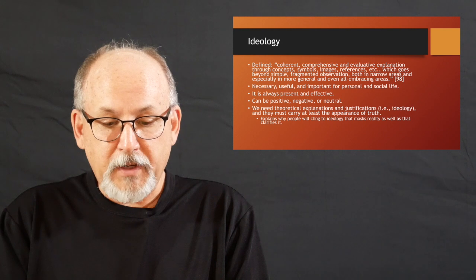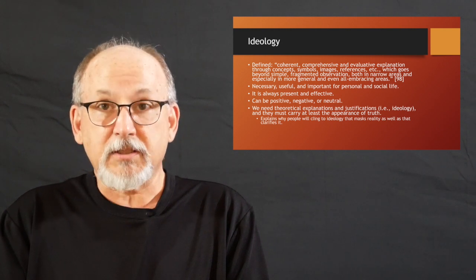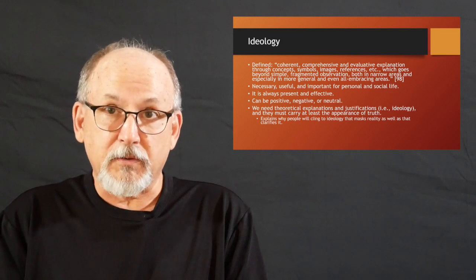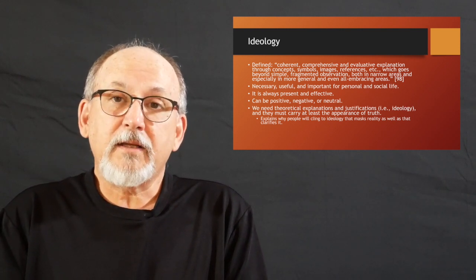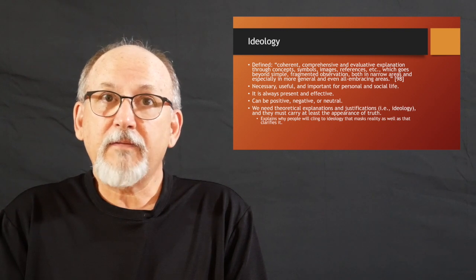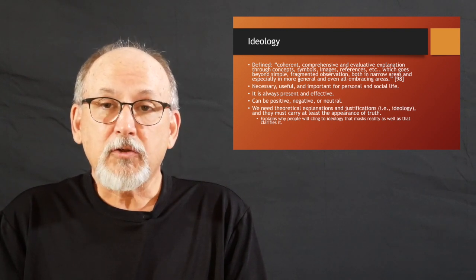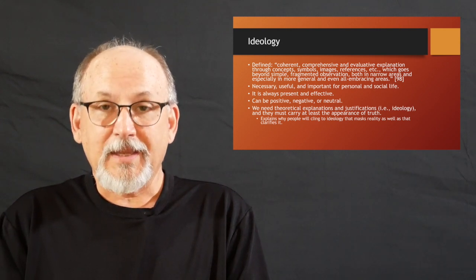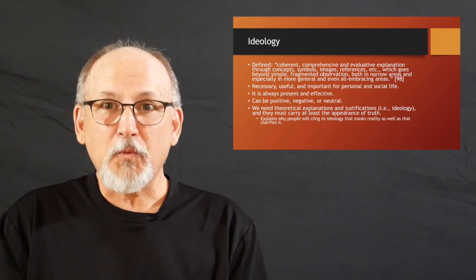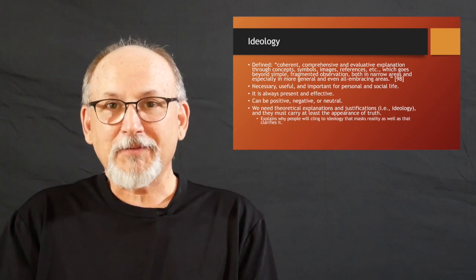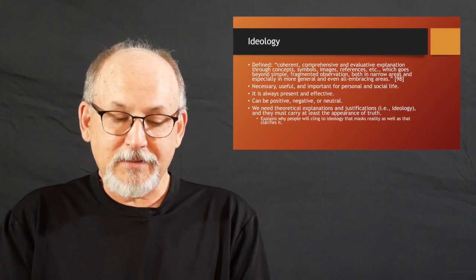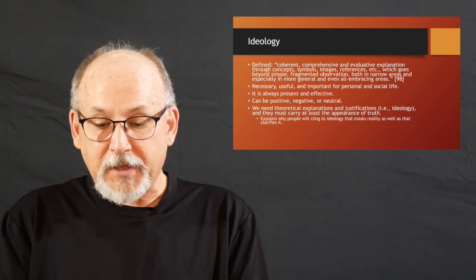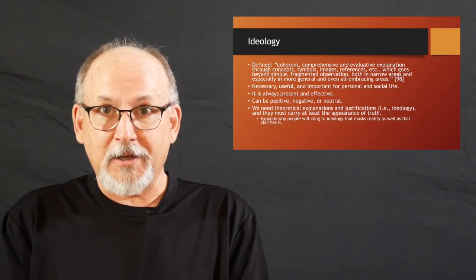He says, we need theoretical explanations and justifications, in other words, ideology, and they must carry at least the appearance of truth. So, even an ideology that, even if it were designed to prevent the masses of people from seeing how things really are, it would still have to, in some way, look like truth. It would have to carry at least the appearance of truth. And he says, this explains why people will cling to ideology that masks reality, as well as that which clarifies it. Because an ideology, in its negative sense, in its pernicious sense, which throws up an obstacle to seeing what's going on, when it's really effective, it's really effective because it looks like truth.